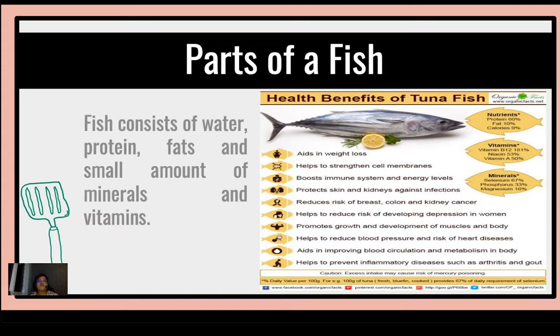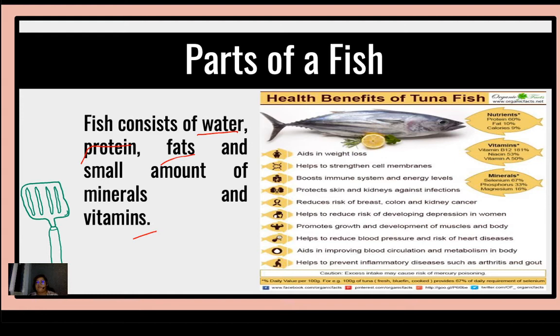For the composition of fish: fish has water, protein, fats, and small amounts of minerals and vitamins as well. Fish has health benefits — they have 60% protein, 10% fat, and 9% of calories, which means it can aid in weight loss. It has vitamins like B12 at 181%, niacin at 52%, and vitamin A at 50%, which helps strengthen cell membranes. It also has minerals: selenium at 67%, phosphorus at 33%, and magnesium at 16%.